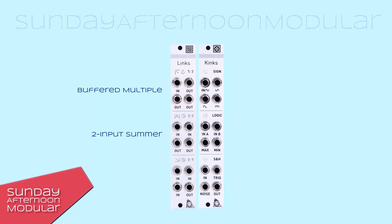The two-to-two section is a two input summer. The sum of input one and two is distributed to the two outputs. The three-to-one section is a mixer with three inputs and one output. It can be used to mix the audio signals of three oscillators.